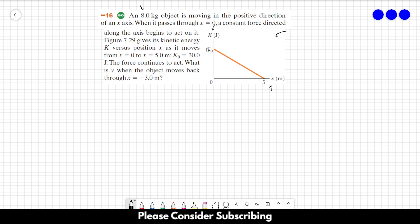So we have an initial kinetic energy when x is equal to 0. At this point, let's call the speed V₀. And we can see that when it reaches 5 meters, the speed is 0. So we can try to find acceleration.